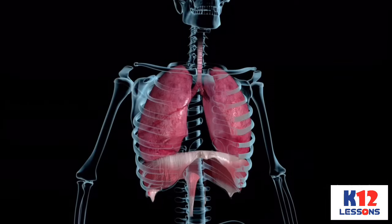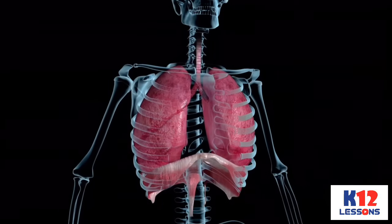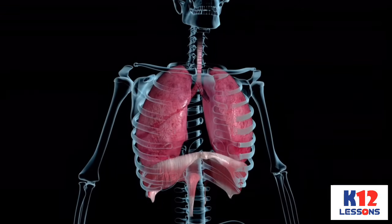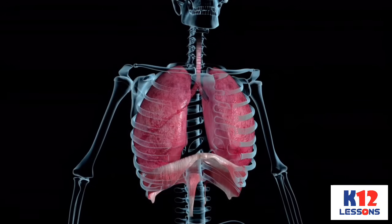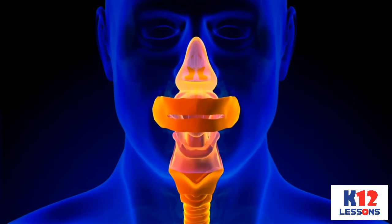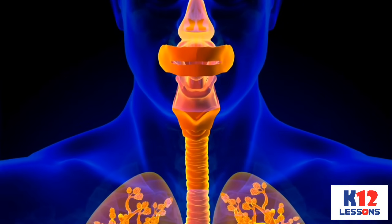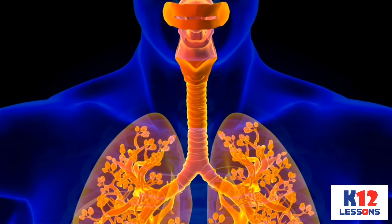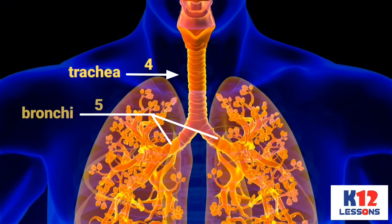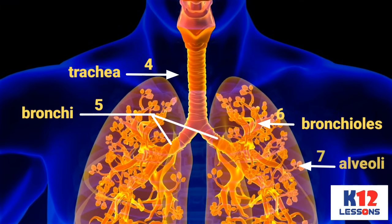Breathing is very important in life. Each organ of the respiratory system works together to circulate oxygen throughout the body. The circulation of oxygen starts from the nostril, going through the pharynx and larynx, down to the trachea, bronchi, and bronchioles, and lastly the air you breathe goes into the tiny walled sacs called alveoli, where the exchange of oxygen and carbon dioxide takes place.